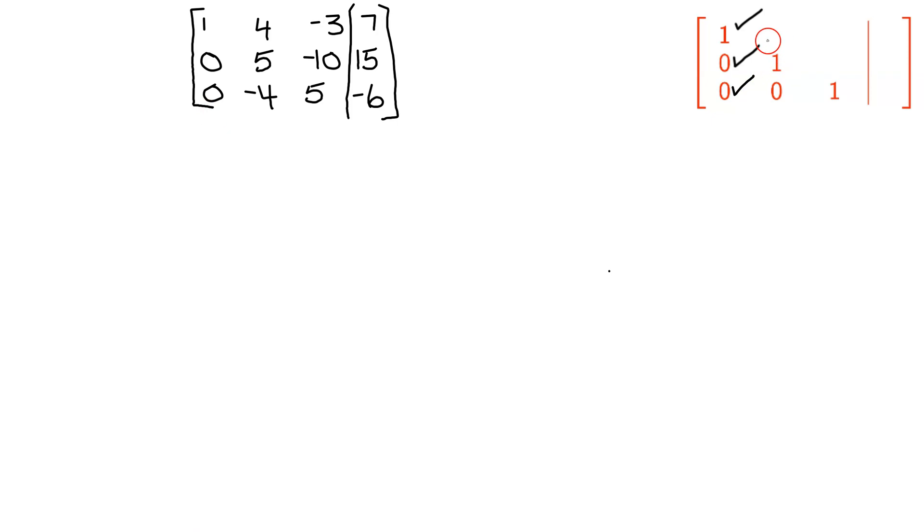The next thing I need to do is go down the leading diagonal, and I need a 1 in row 2, column 2. That's where the 5 is. If this negative 4 had been a 1, I could easily switch those two rows, but it's not. But we're lucky we can still avoid fractions because every element in row 2 is a multiple of 5. So I'm going to multiply row 2 by 1 fifth, and put it in row 2.